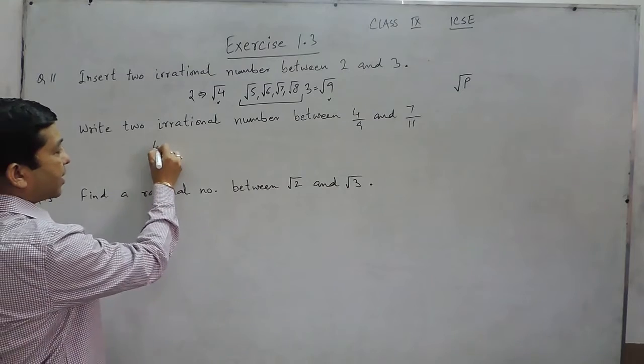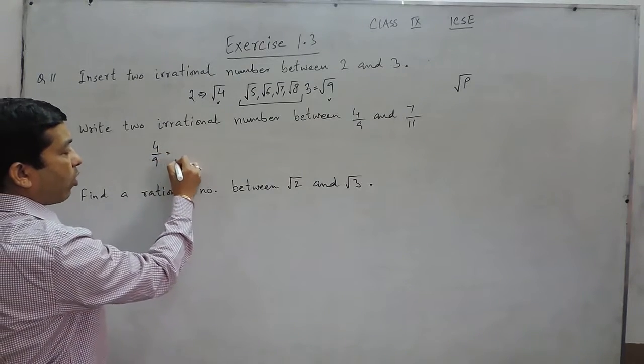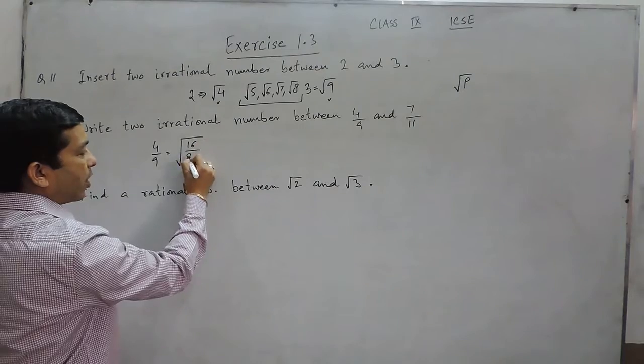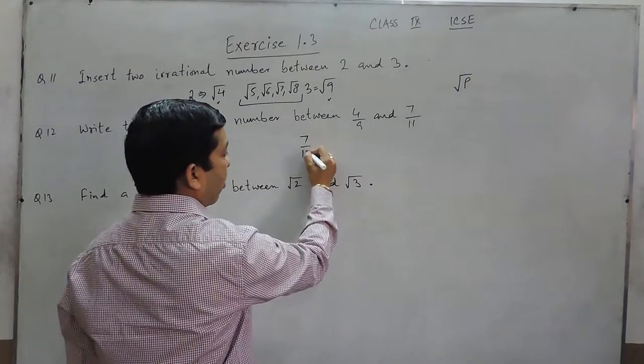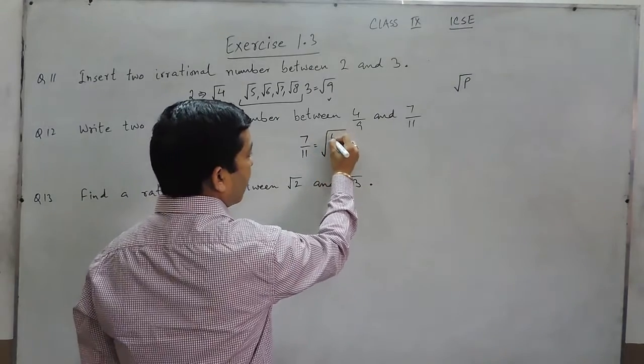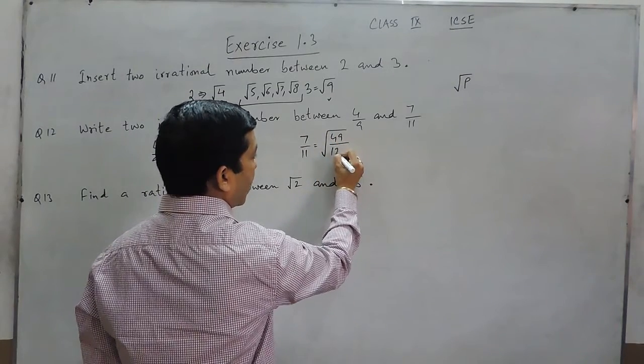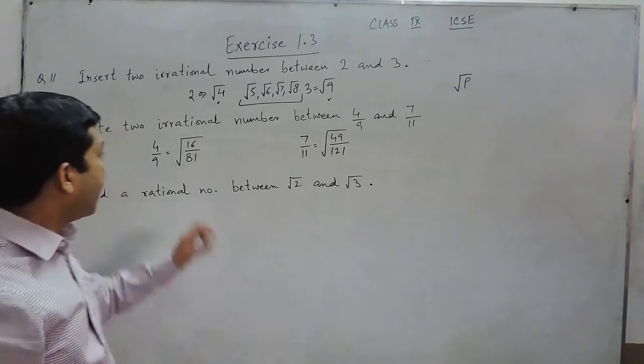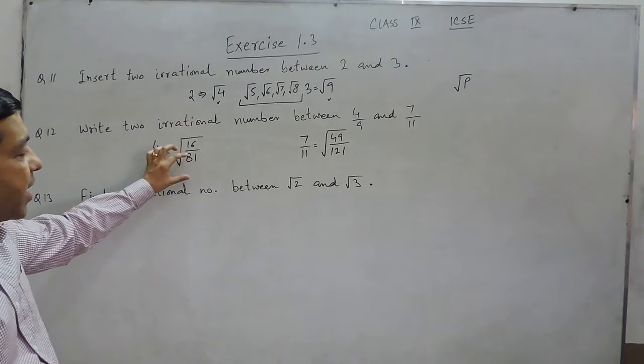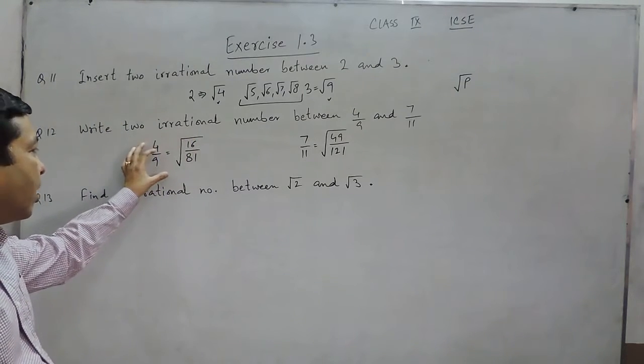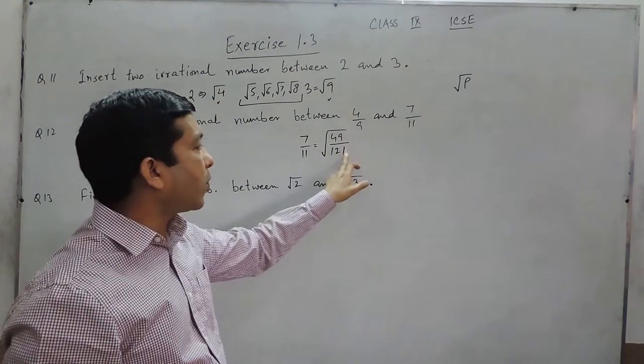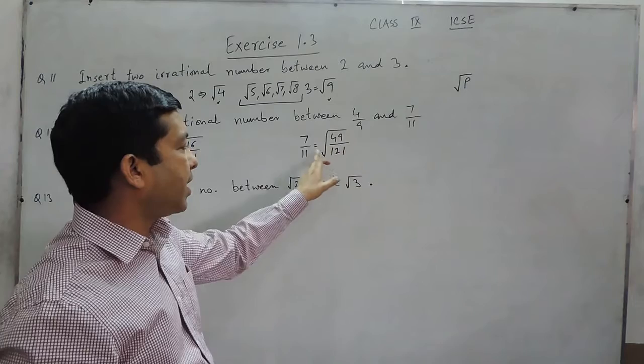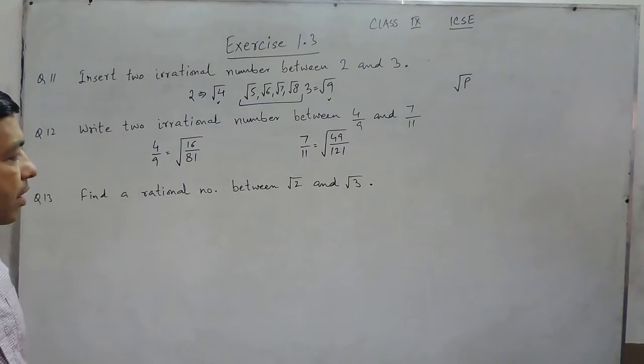Same way we understand that 4 upon 9 can also be written as under root of 16 upon 81. While 7 upon 11 can also be written as under root of 49 upon 121. As 16 and 81 are perfect squares, so when we take the under roots this becomes our rational number. Same way 49 and 121 are perfect squares, when we take the under root this also becomes the rational number.